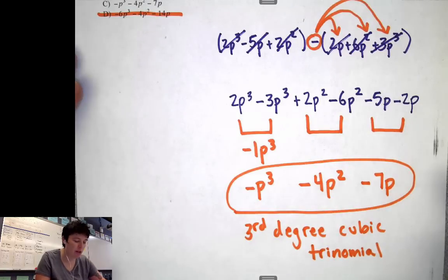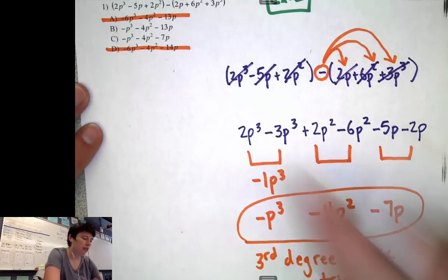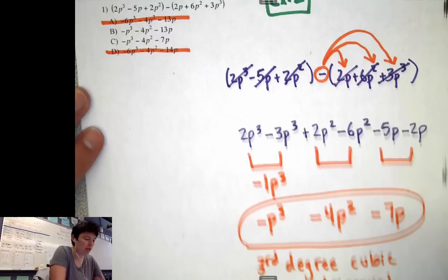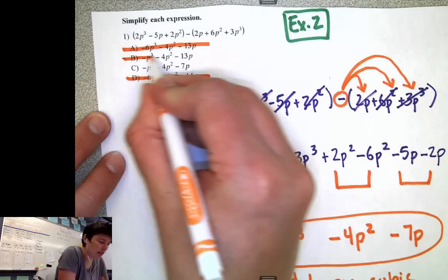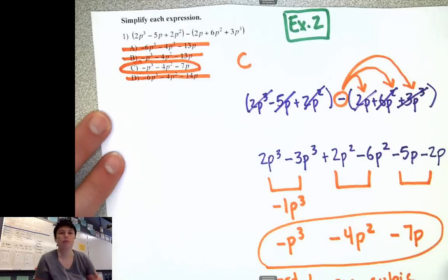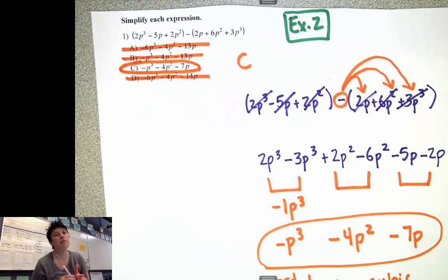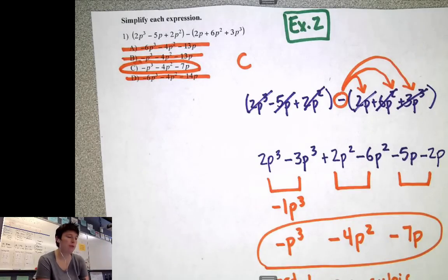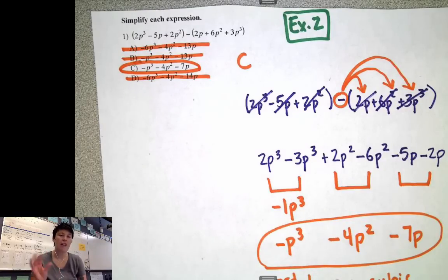Looking at our multiple choice answer — it's C, because it has minus 7p. That matches what we got, so B is not correct. C is my final answer. Process of elimination is a strategy I like to use on almost all of my multiple choice problems. It really helps me narrow it down, and at least if I end up guessing, I feel like I have a better shot. So always a good strategy.